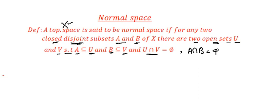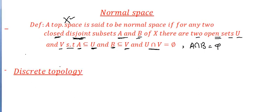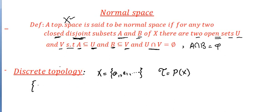Now let's go to examples. Which spaces are normal spaces? First example: discrete topology. Discrete topology has a ground set X and the topology is the power set of X. For a standard set with elements a1, a2, and so on, take a pair of closed sets — for example, the singleton set {a1} and the singleton set {a2}. These are two subsets of the ground set.